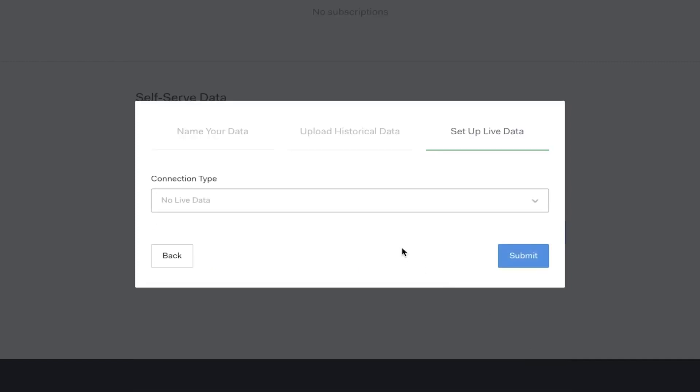Finally, I'm asked if I want to set up a nightly update process for my dataset. If I want to live update a dataset, I'll need to host a file somewhere like on Dropbox or Google Sheets and keep it up to date. Files are checked for new data on a nightly basis. Since we're only using historical uploads of our data, we can select no live data.